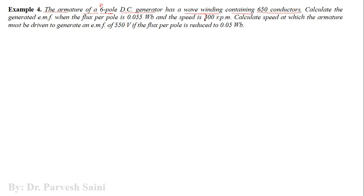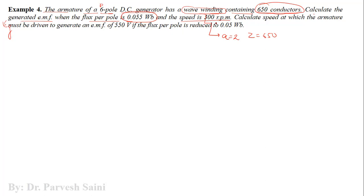The statement: the armature of a six-pole DC generator has wave winding connecting 650 conductors. So A = 2 (wave wound) and Z = 650. Case one: calculate the generated EMF Eg when flux per pole = 0.055 weber and speed = 300 rpm. Case two: calculate the speed at which the armature must be driven to generate 550 volts if flux per pole is reduced to 0.05 weber.